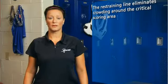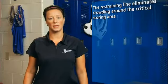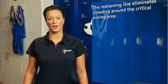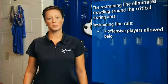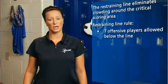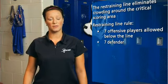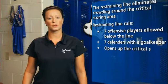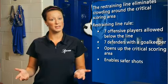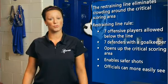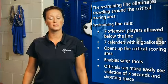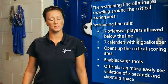The restraining line was introduced in the women's game to eliminate crowding around the critical scoring area. The rule allows 7 offensive players below the restraining line and 7 defenders with the goalkeeper. This rule has opened up the critical scoring area, enabling players to take safer shots and allowing officials to more easily see defenders in violation of 3 seconds and shooting space.